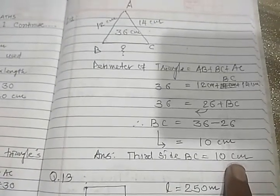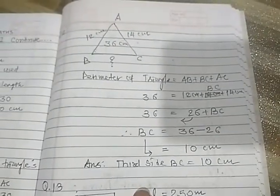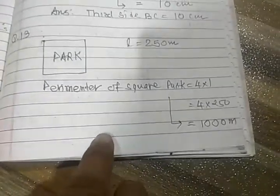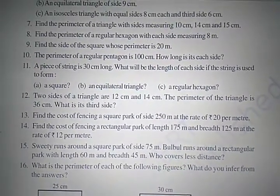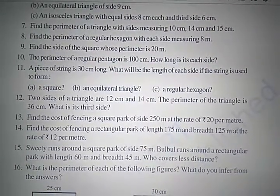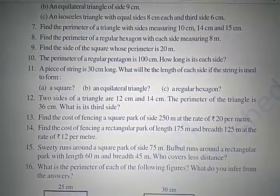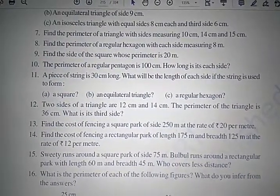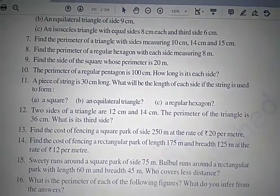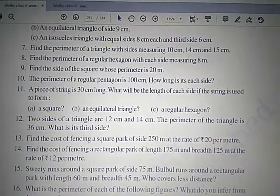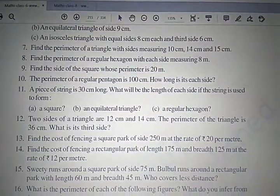The third side BC equals 10 centimeters. Moving to example number 13: find the cost of fencing a square park with side 250 meters at the rate of 20 rupees per meter. Remember: per meter means you need to find perimeter, and per square meter means area. Since fencing means boundary, we find the perimeter of the square first.